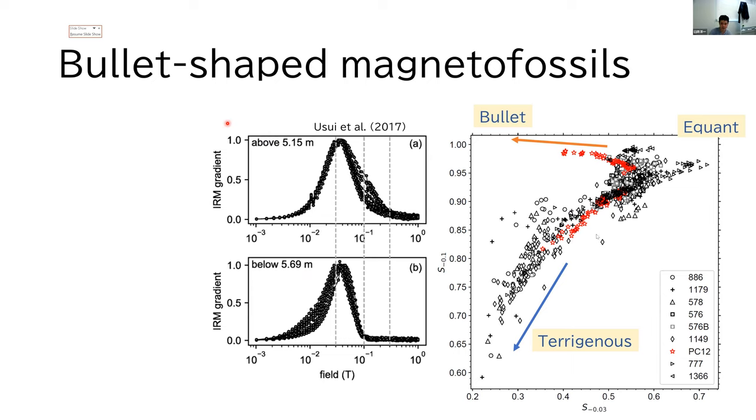this is another compilation of data, this time S-ratio for 100 millitesla and S-ratio for 30 millitesla. Because elongated bullet-shaped magnetofossils have higher coercivity than equivalent magnetofossils,